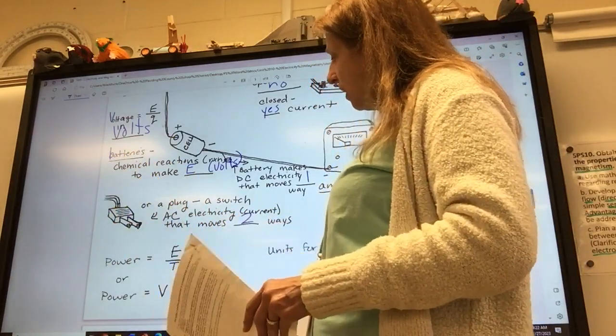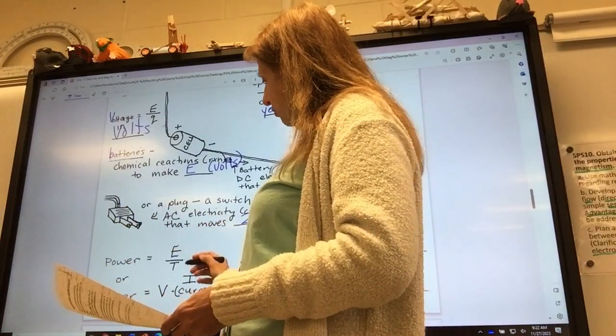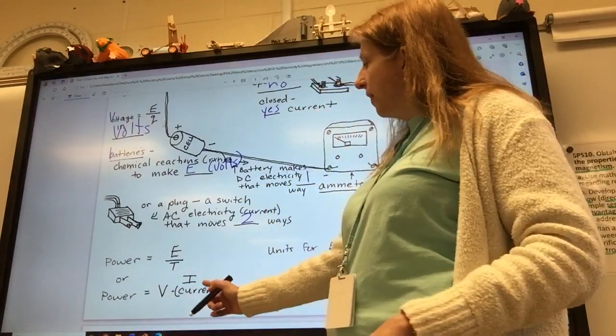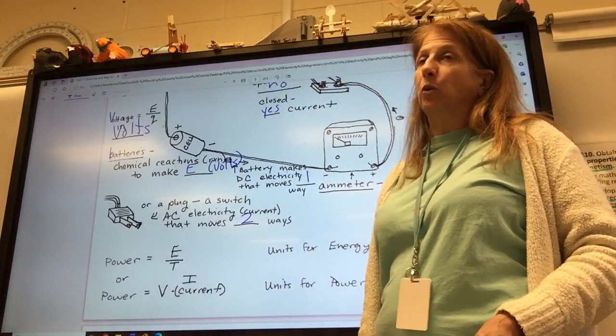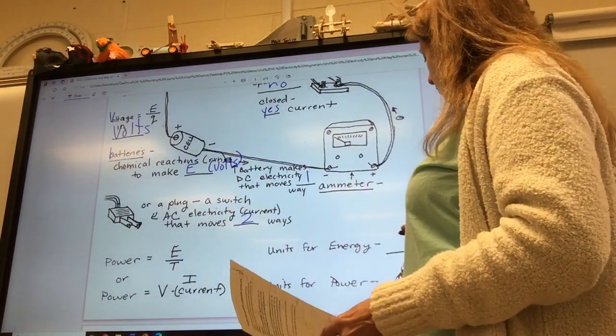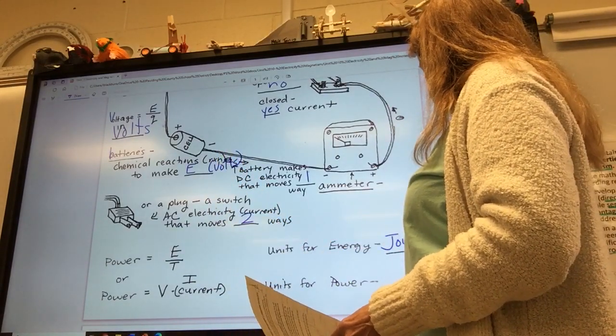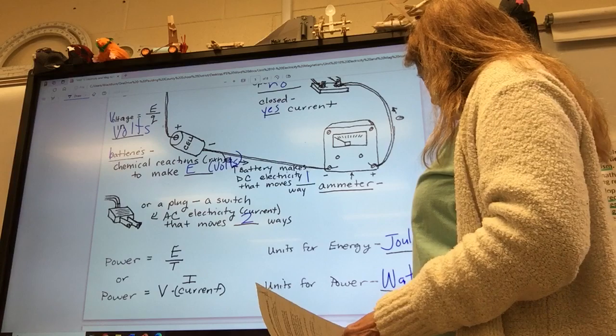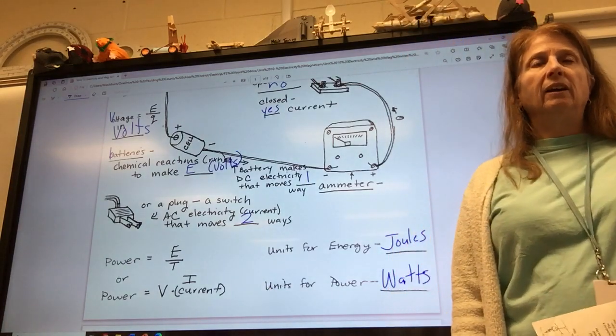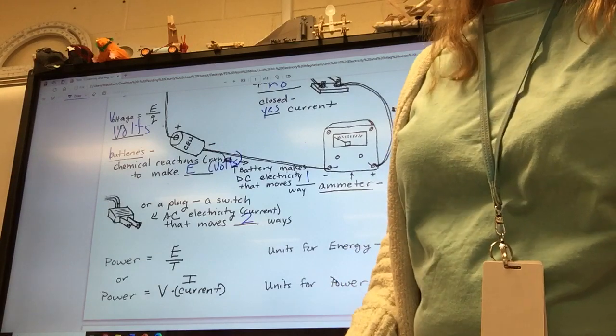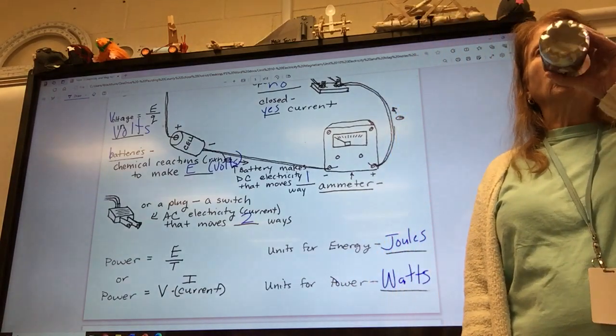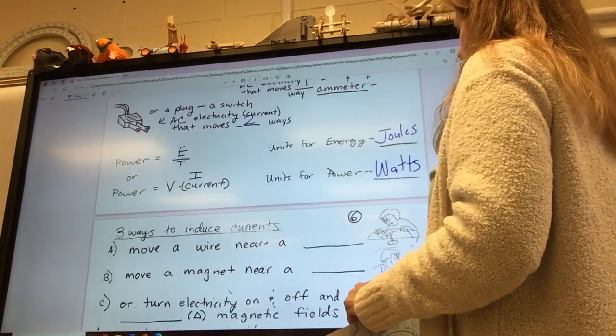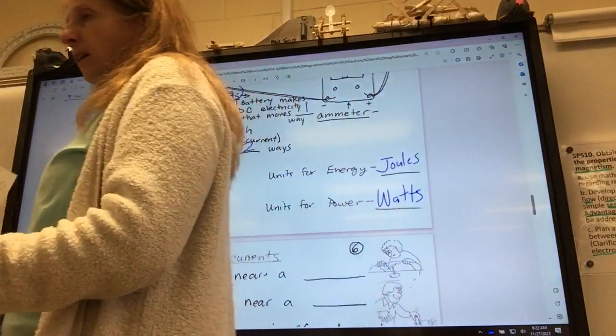The kind of electricity made for a battery is called DC electricity. It only moves in one direction. It only moves one way. You can also have a plug. You can plug in your circuit, and the plug switches the electricity back and forth. It moves two ways. So, when you plug it in, the electricity jiggles back and forth. That's AC. If you have a battery, it only goes one direction, DC, direct current. Power is sort of like the rate of electricity being used. It's the energy over the time. Or, it's equal to the volts minus the current. The symbol for current is I. The units for energy you already know are joules. And the units for power are watts.